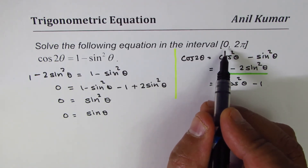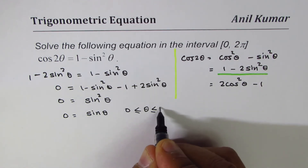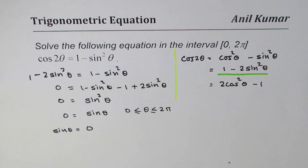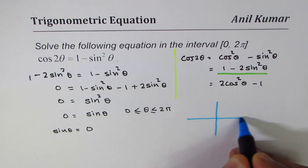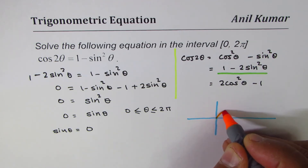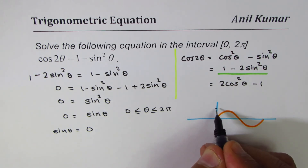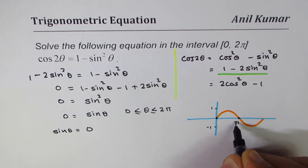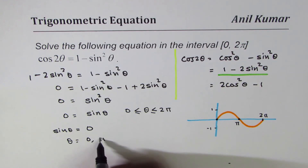We have to work in the interval where θ is between zero and two pi. We have sinθ equals zero. To get the solution, we can look at the graph of sinθ. The sine graph has a maximum of one and a minimum of minus one, and it equals zero at zero, at pi, and at two pi.